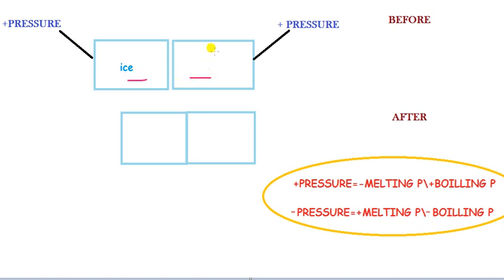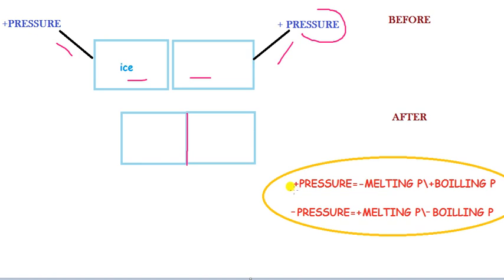Two small pieces of ice cube require pressure on their surface. The pressure is applied on one surface of the ice cube. If pressure is applied, the melting point decreases — it goes to minus values, less than zero degrees.